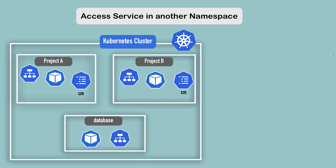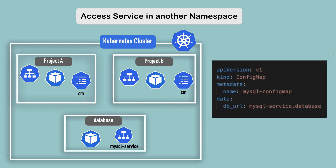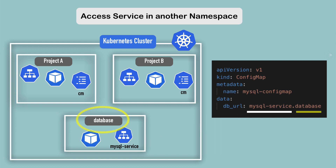However, a resource that you can share across namespaces is a service. A config map in project-B namespace can reference a service that will eventually be used in a pod. In a config map definition, the database URL — in addition to its name, which is my-sql-service — will have the namespace appended at the end. Using that URL, you can access services from other namespaces, which is how you can use shared resources like Elasticsearch or Nginx from other namespaces.